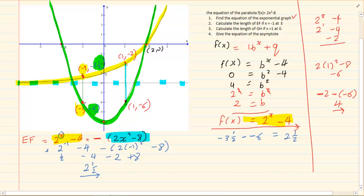Now if we wanted to use this method where we use the equation. Can you see it's still exponent minus parabola. So we could have simply substituted and said GH is equal to 2 to the power of 1 minus 4 minus open brackets 2 to the power of 1 all squared minus 8. Remember I'm using this formula which is the exponent minus the parabola. And if you use your calculator you see we've got 2 minus 4 is minus 2 minus 2 is minus 4 plus 8 is 4. It will give you the same answer.